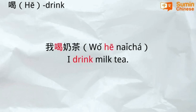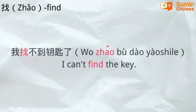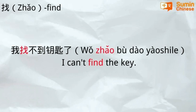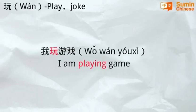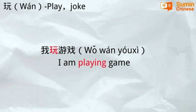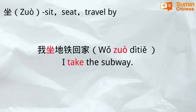Use the verb 找 (to look for): 我找不到钥匙了 — I can't find my keys. Use the verb 买 (to buy): 我买了水果 — I bought fruit. Use the verb 玩 (to play): 我玩游戏 — I play games.